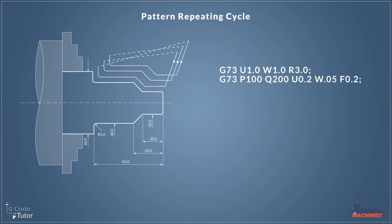Our third repetitive cycle is our pattern repeating cycle. This works slightly differently to the other two. The tool follows the same pattern each cut. This is ideal if we're cutting pre-machined billets such as castings or forgings. This way we're not taking a lot of cuts in air, we're actually cutting the profile of the part that's already been pre-formed. And the information we give it using the G73 is almost identical to the G71 and the G72.